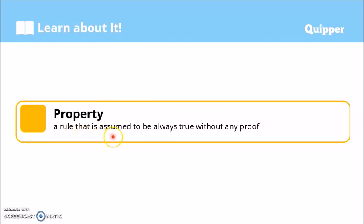When we say property, it refers to a rule that is assumed to be always true without any proof. Ibig sabihin, when we say property, rule na yan. It exists — we accept that fact even without proof.